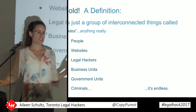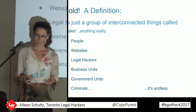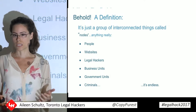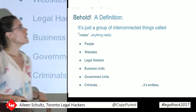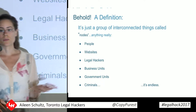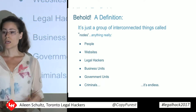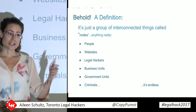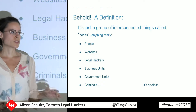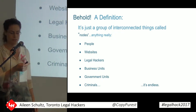So a network is just a group of interconnected things, and these things are called nodes or vertices. This could be absolutely anything — it could be hardware devices, business units, government units, legal hackers, criminals, absolutely anything at all.